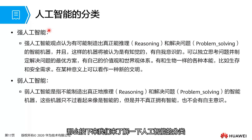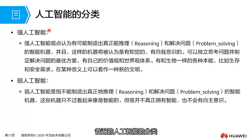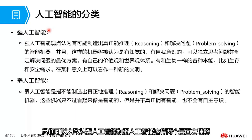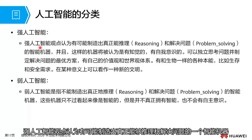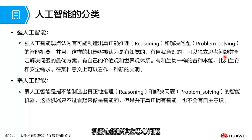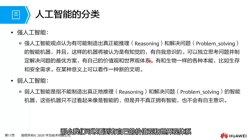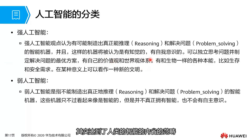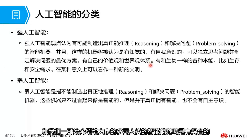Next, let's understand the classification of artificial intelligence. In general, AI can be broadly understood from the perspectives of strong AI and weak AI. Strong AI holds the view that it is possible to create a truly intelligent machine capable of reasoning and problem solving. Such a machine is considered to have perceptual self-consciousness — it can independently think about problems, formulate optimal solutions, and have its own values and worldview system, reaching the category of human intelligence introspection.